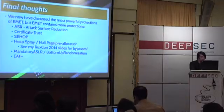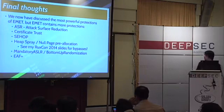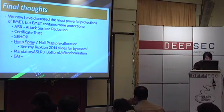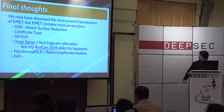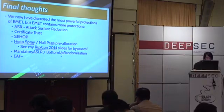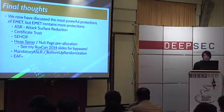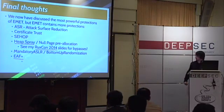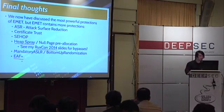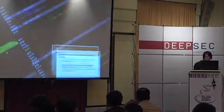EMET consists of many more protections like attack surface reduction, certificate trust, and SEHOP. SEHOP can be very easily bypassed once you can bypass ASLR. Mandatory ASLR and bottom-up randomization just increase the effectiveness of address randomization. EAF+ is something interesting—it should prevent my current exploit but doesn't; I'm not sure why. We discussed this with Microsoft and they said they tried to fix it. Even if it did block my exploit in the current configuration, it would be easy to bypass, so it's not very powerful either.